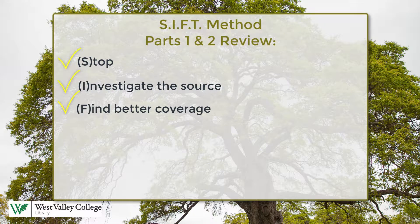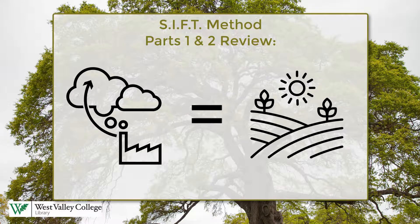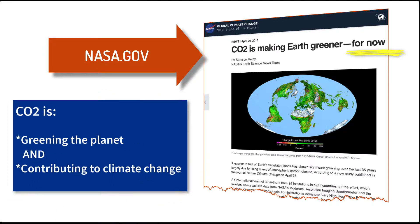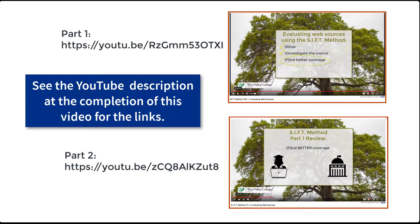In Parts 1 and 2, we completed the first three steps of the SIFT method after hearing a claim on how CO2 plays a positive role in greening the planet. We were successful in finding a source that gave an objective view on CO2 — it is greening the planet, but it's also contributing to climate change. Please view those videos if you want to see how we arrived here in Part 3.